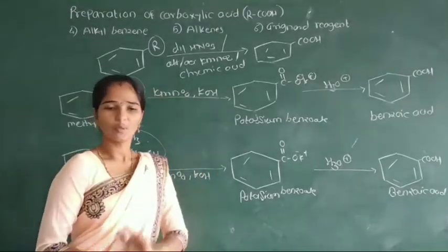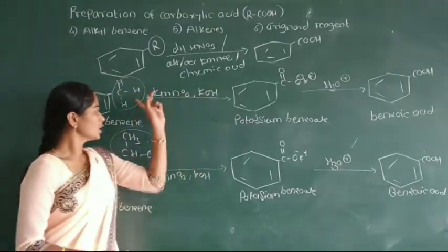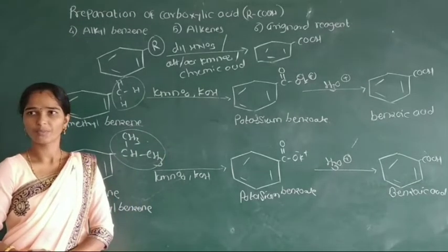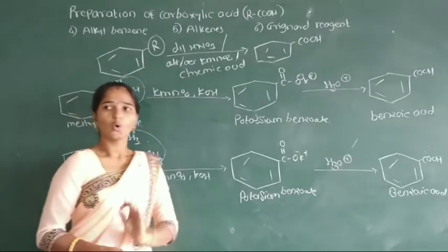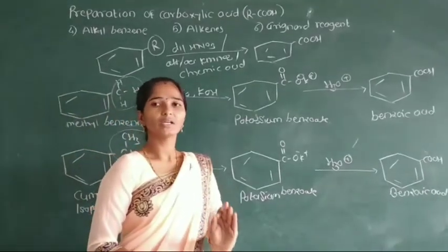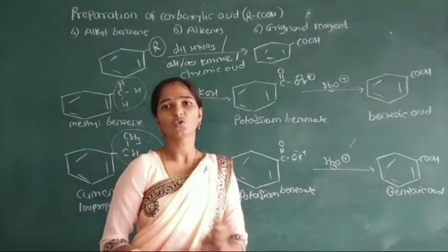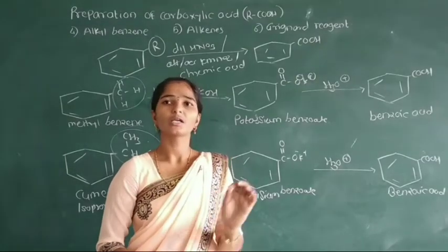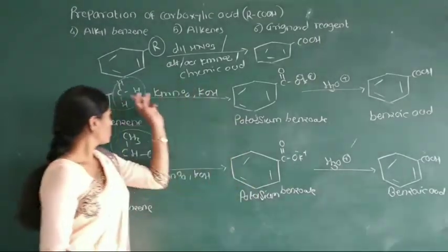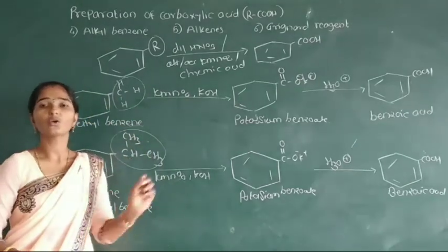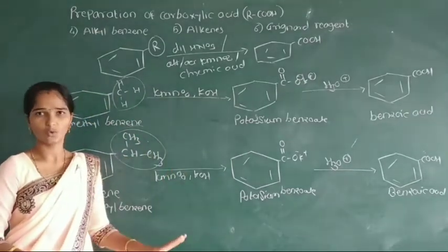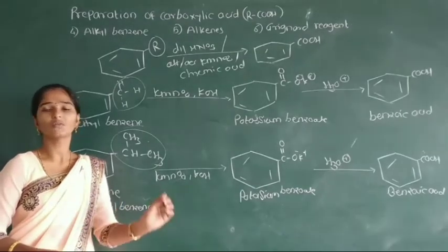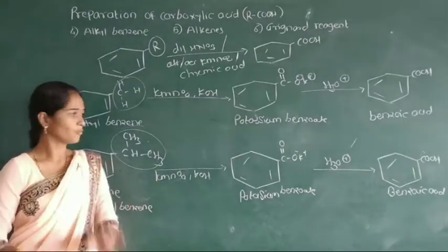In this alkyl benzene, the alkyl group may be primary, secondary, or tertiary. In this method, only primary and secondary alkyl groups attached to benzene are oxidized. Tertiary alkyl groups attached to benzene are non-oxidized by this method — this tertiary alkyl group is not converted into the carboxyl group.